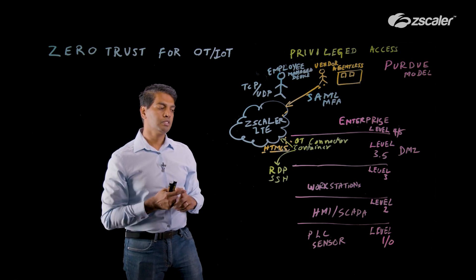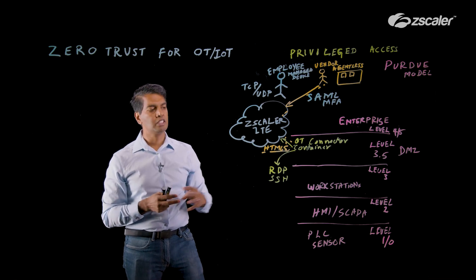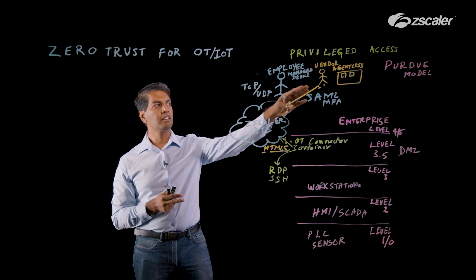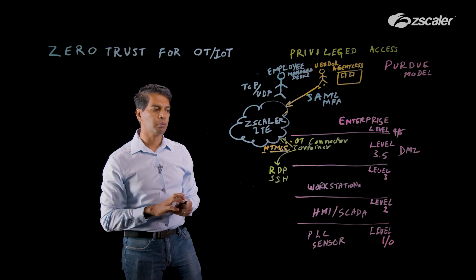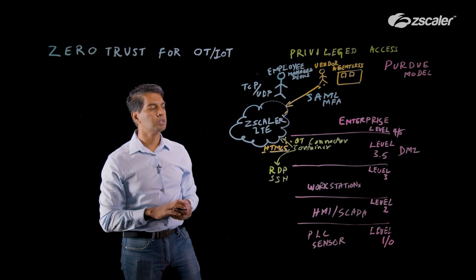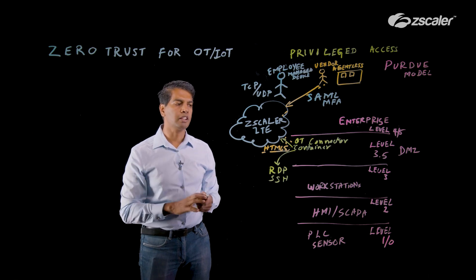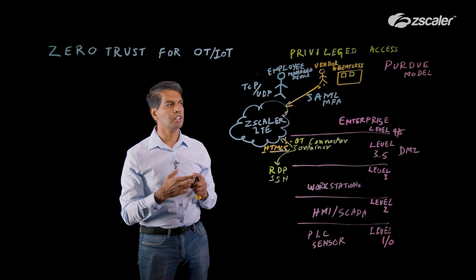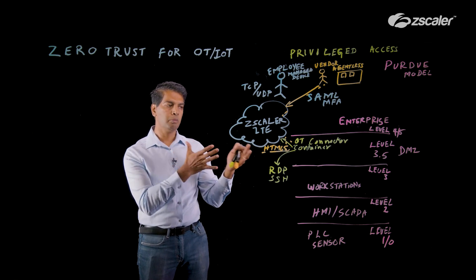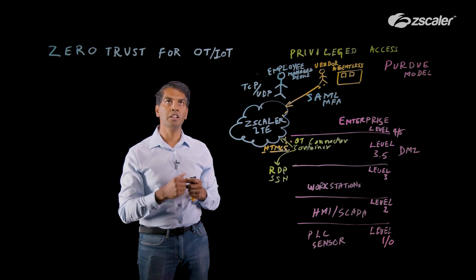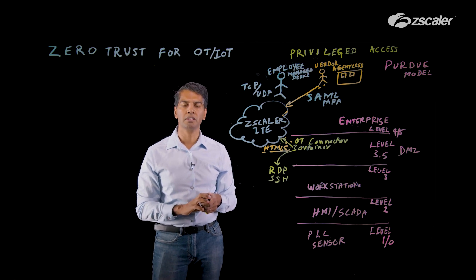If you have systems that can't be patched, or can't be patched as often, providing this isolated access for your vendor — making it seamless for the vendor to come through a browser and access those systems — is what's working out well for many of our customers. I hope this gives you a quick overview of how this solution is technically deployed. You can avoid the segmentation challenges typically associated with VPNs and firewalls; it's far more simplistic to deploy. Please get in touch with us on your zero-trust for OT journey and privileged access for your users and vendors. Thank you.